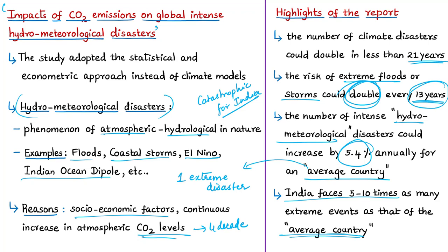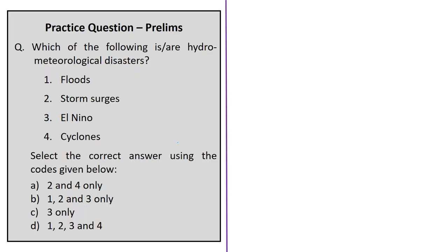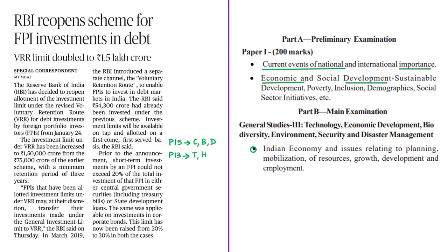The estimates in this study suggest that if current trends in environmental degradation and carbon dioxide accumulation remain unchecked, the frequency of intense hydrometeorological disasters would increase dramatically. This doubling of extreme floods every 13 years would be catastrophic for India, severely damaging the environment, socio-economic progress, and the welfare of millions. Therefore, the report calls for strong and urgent implementation of climate change mitigation and adaptation measures, such as the state action plans on climate change discussed in a previous session.